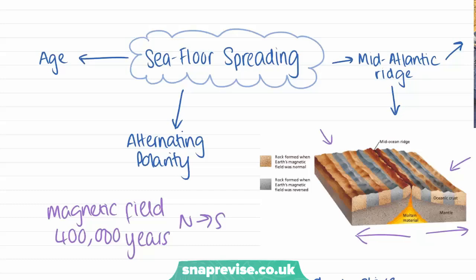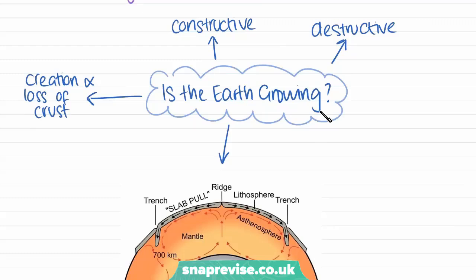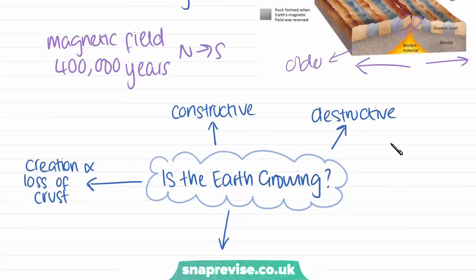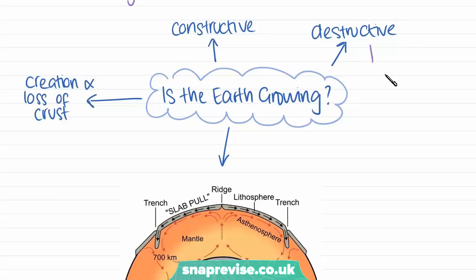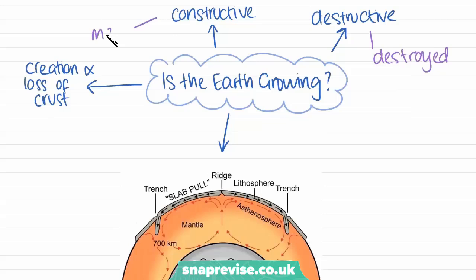This theory of seafloor spreading proves and explains continental drift. Because new rock is being produced in the middle, the crust further away from the Mid-Atlantic Ridge is older. This suggests the Earth might be growing, but that's not the case — where we have boundaries where crust is being created, we also have plate boundaries where crust is being destroyed. These are destructive plate boundaries, where crust is being lost, versus constructive boundaries — like the Mid-Atlantic — where crust is being made.